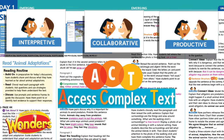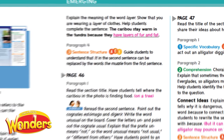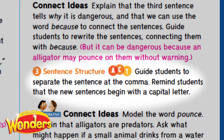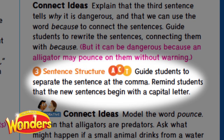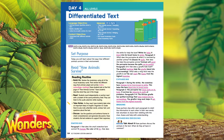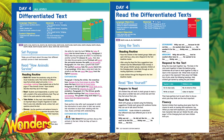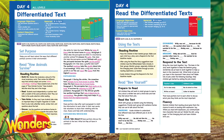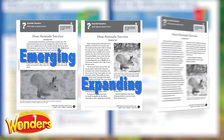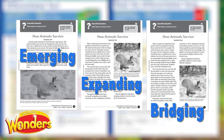Notice the ACT, or accessing complex text, logos. ACT support gives teachers explicit teaching points regarding what makes each text complex for English learners. And for application, Wonders for English Learners provides weekly differentiated texts at three levels.